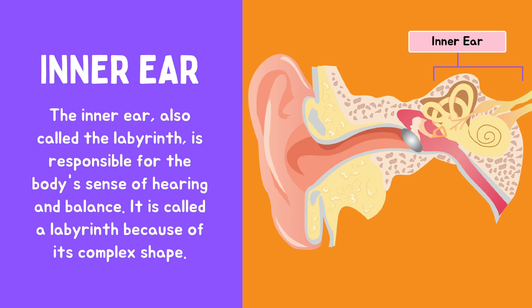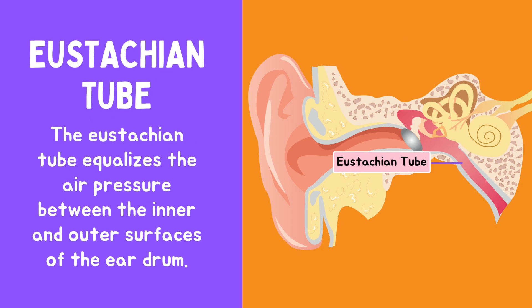The middle ear contains three ossicles, which are tiny bones that transfer the sound from the eardrum to the inner ear. The inner ear, also called the labyrinth, is responsible for the body's sense of hearing and balance. It is called the labyrinth because of its complex shape.